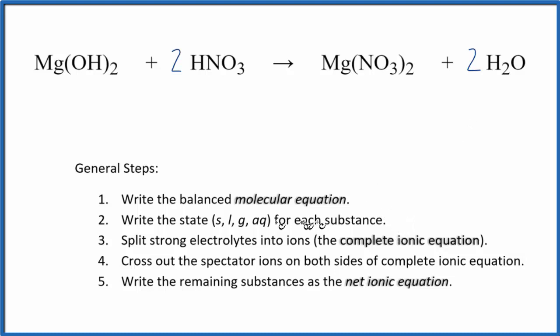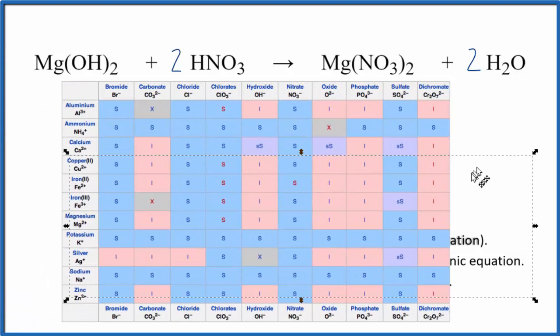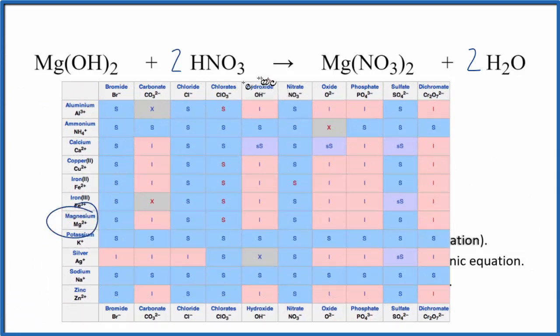Once we have that done we can write the states for each substance. We need to be careful with hydroxides. Often they're not soluble, especially this group 2. Magnesium is in group 2. Let's check that on a solubility table. So we look at our solubility table here. Here's magnesium and then hydroxide. So we go over here and then down. We have that I there.